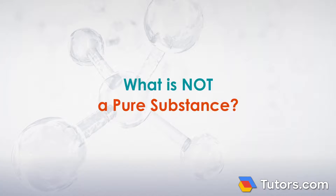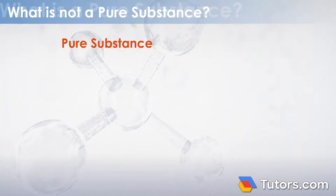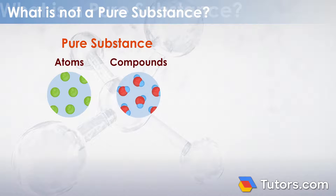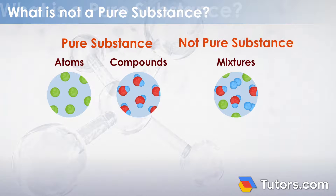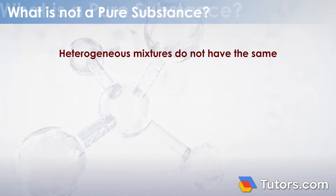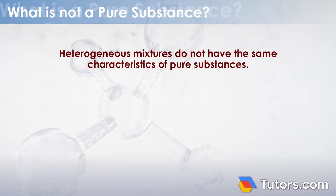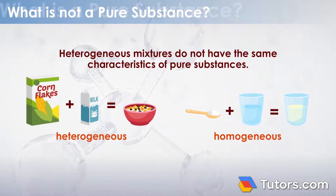What is not a pure substance? All matter is either a pure substance — atoms or compounds — or mixtures. Mixtures are not pure substances because they have variable compositions. Heterogeneous mixtures do not have the same characteristics of pure substances; one sample can have different physical and chemical properties than a second sample from the same mixture.